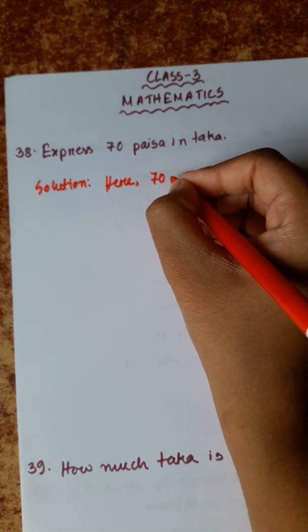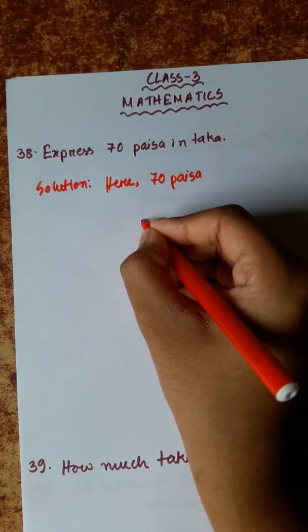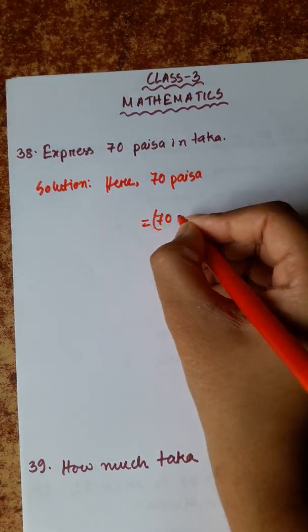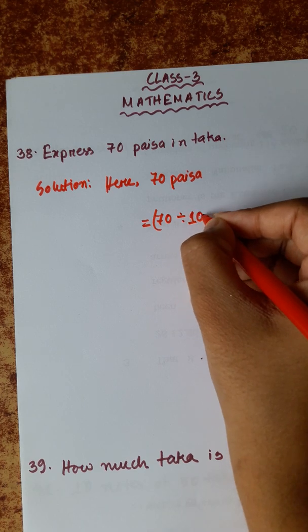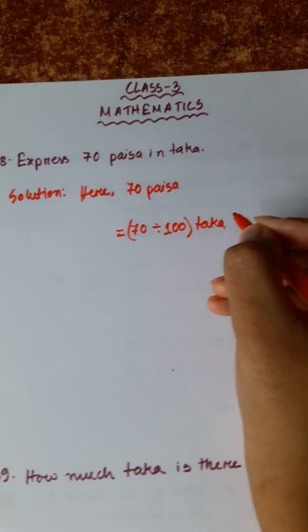Given is 70 Paisa. We have to express it into Taka. So 70 divided by 100 Taka. Hence,